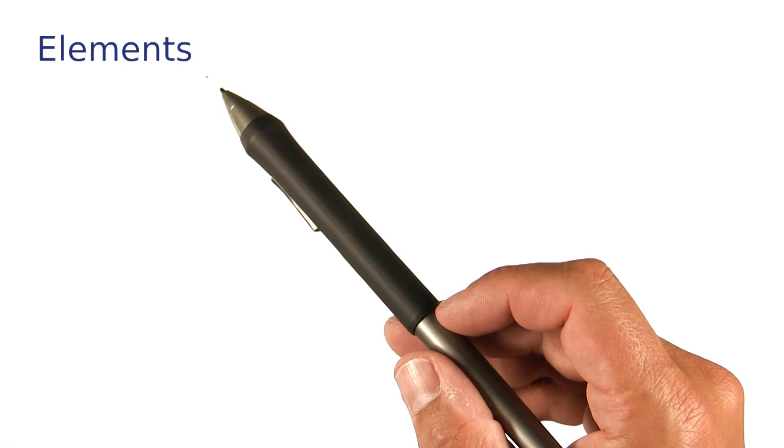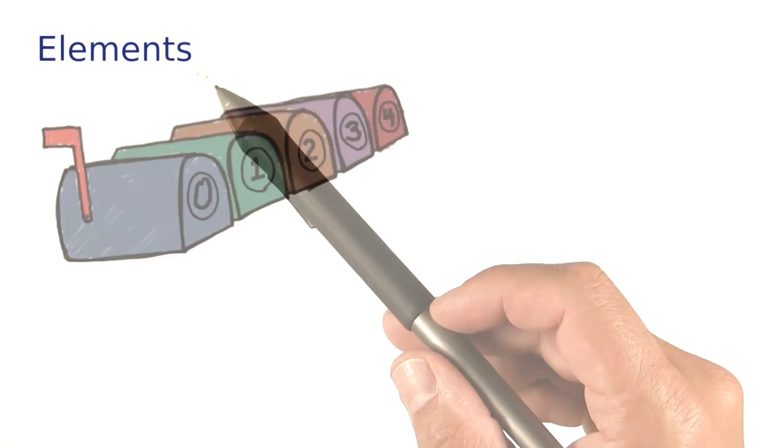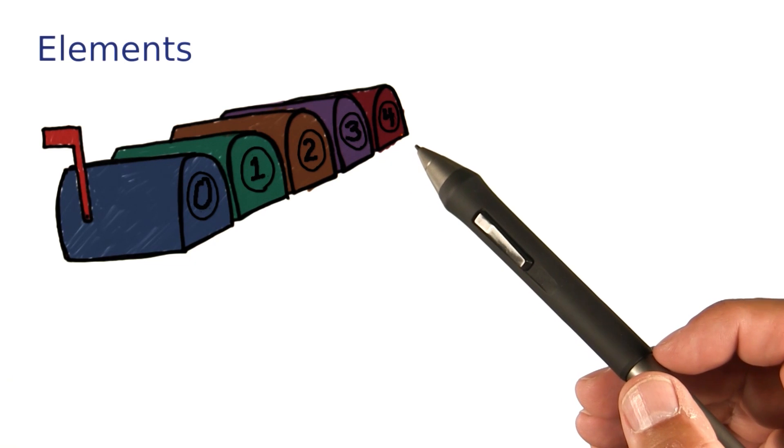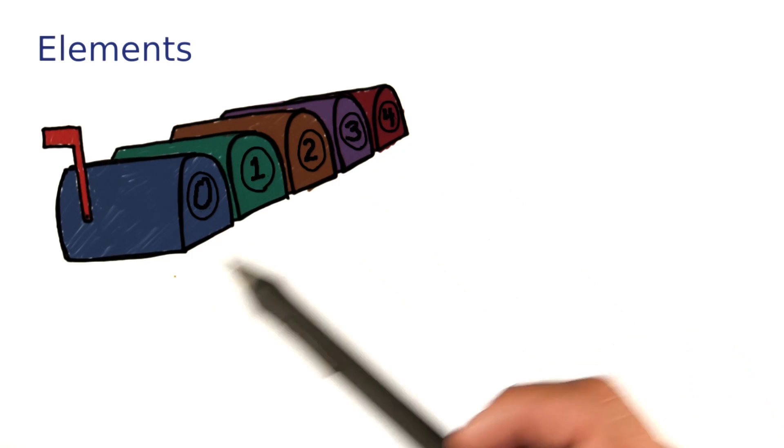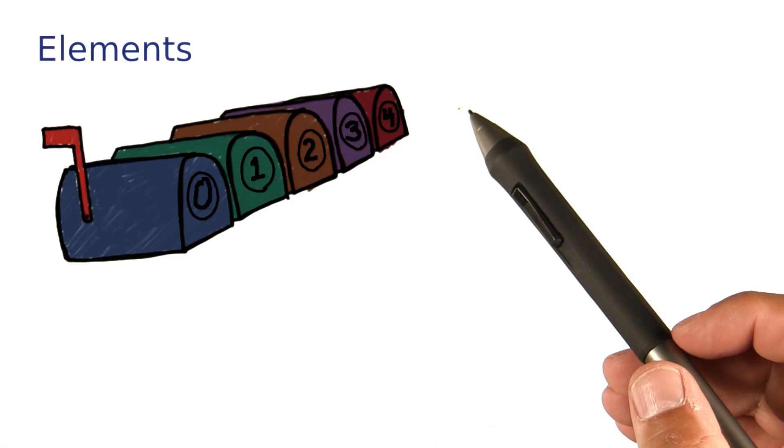An ArrayList collects objects. We call those objects the elements of the list. Here's one way of thinking about an ArrayList. You can think of it as a sequence of mailboxes.